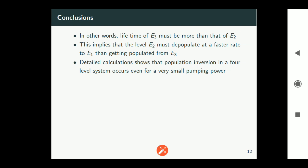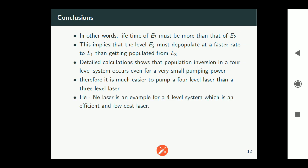We don't have to supply huge amount of power to get a population inversion and emission of lasing light. So therefore it is much easier to pump a four level laser than the three level laser and because of this reason four level laser is a highly efficient laser. Helium neon laser is an example for a four level system which is highly efficient and low cost because of the low power it is a low cost laser also.